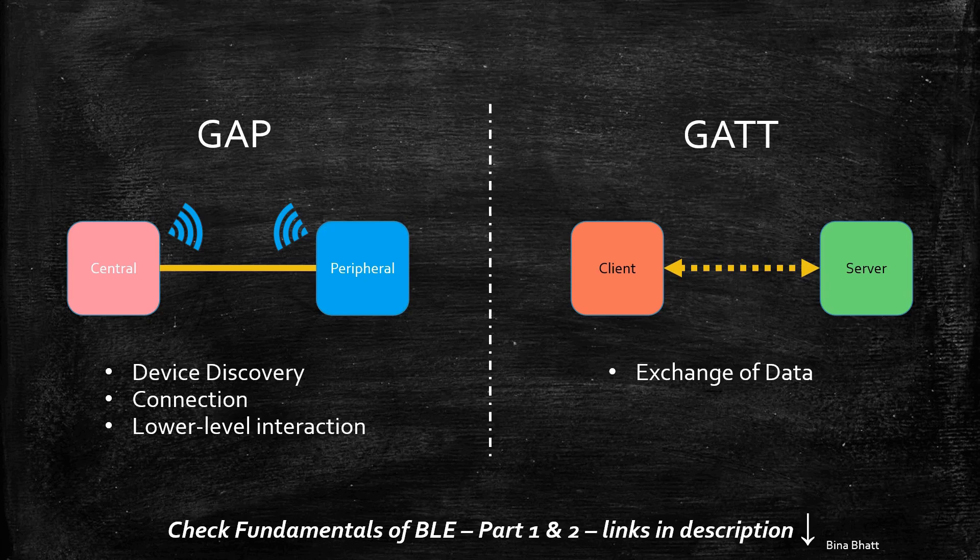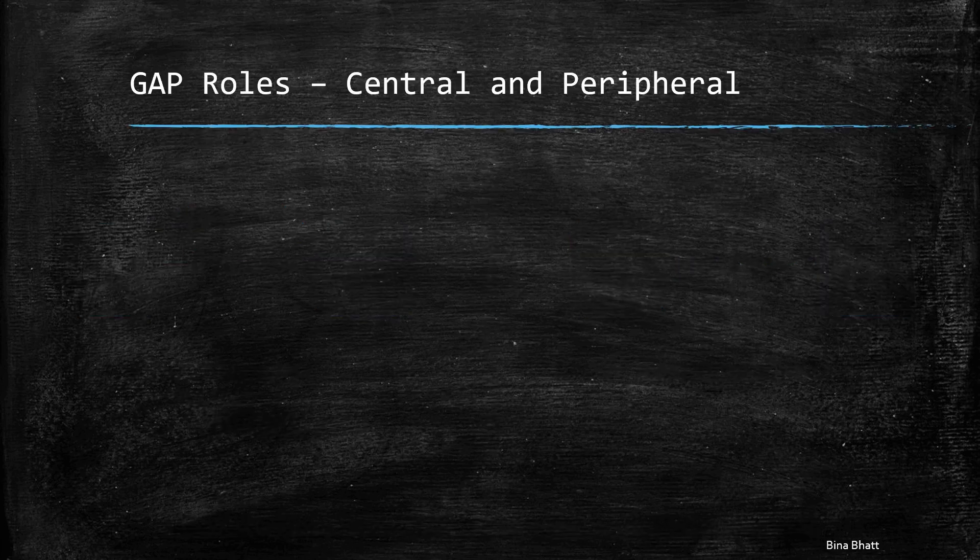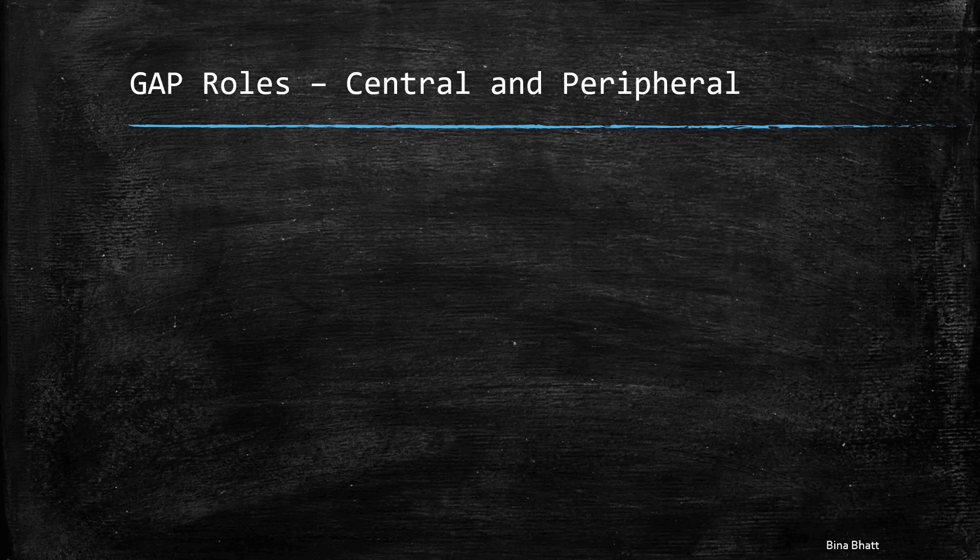Anyway, coming back to this one, central and peripheral are GAP roles and client and server are GATT roles. Now let us look at the definition of each of these roles.